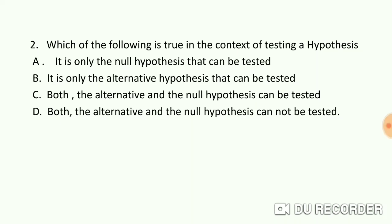Question number 2. Which of the following is true in the context of testing a hypothesis? Option A: It is only the null hypothesis that can be tested. B: It is only the alternative hypothesis that can be tested. C: Both the alternative and the null hypothesis can be tested. D: Both the alternative and the null hypothesis cannot be tested.